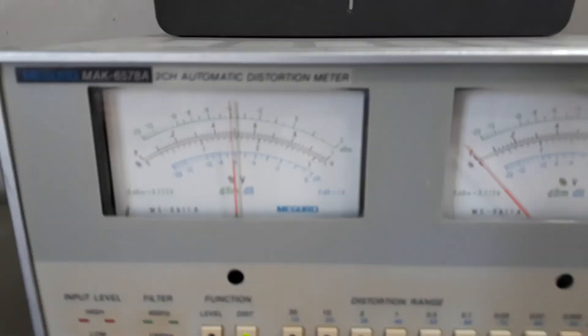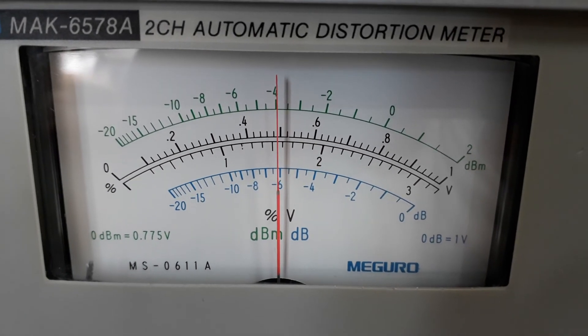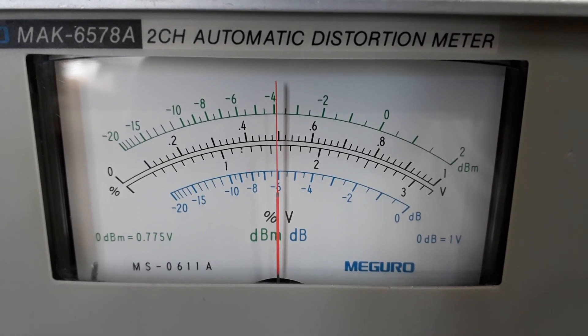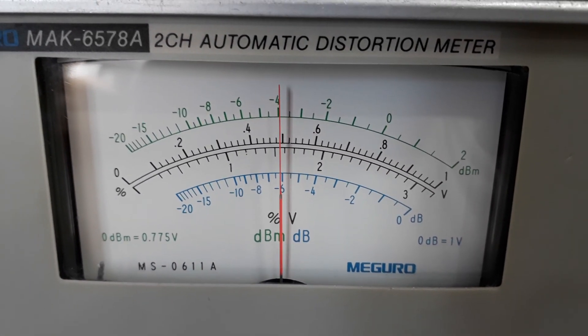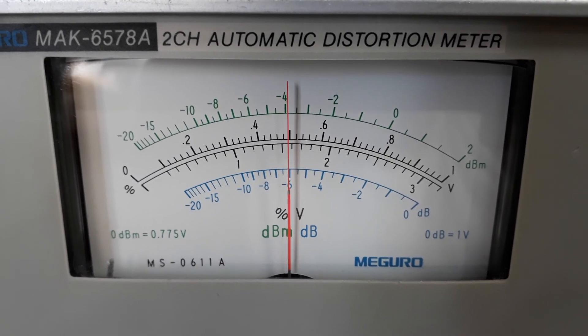So, distortion here is less than 0.001. It's 0.0005. 0.00005 THD.